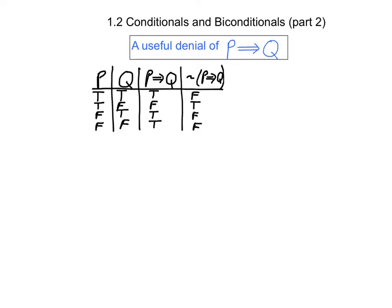We saw in the previous video that the truth table for the conditional statement p implies q is given by this part of the table. So that means we can easily produce the truth table for the negation of p implies q just by reversing all of these values here. Note that the negation of p implies q is true precisely in this instance here when p is true and q is false.